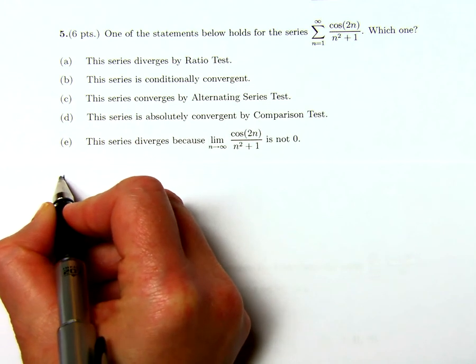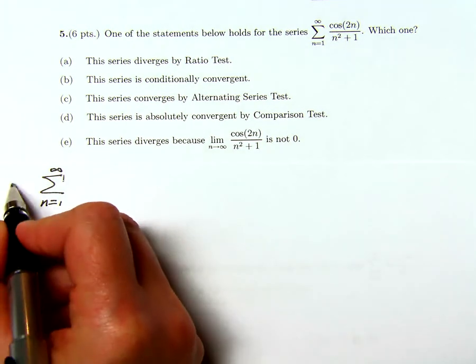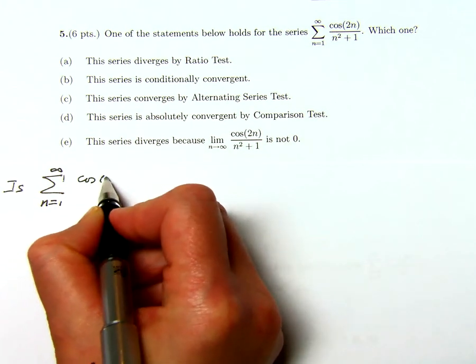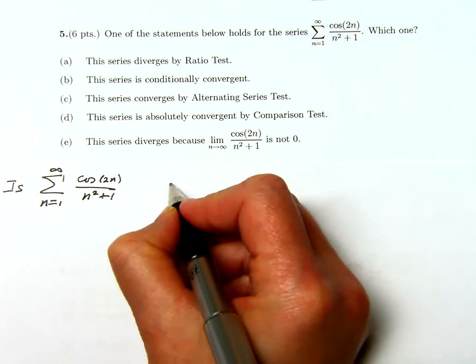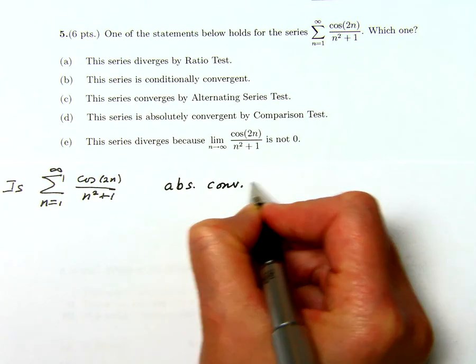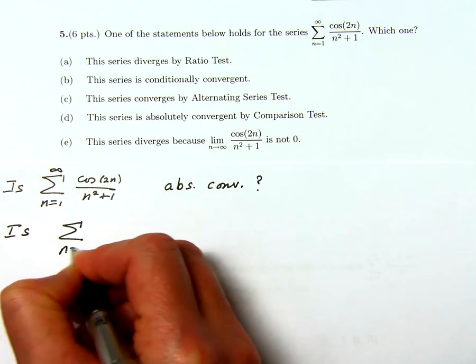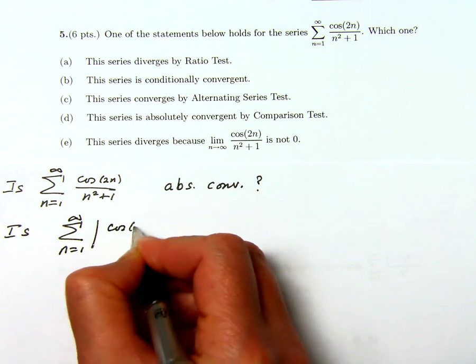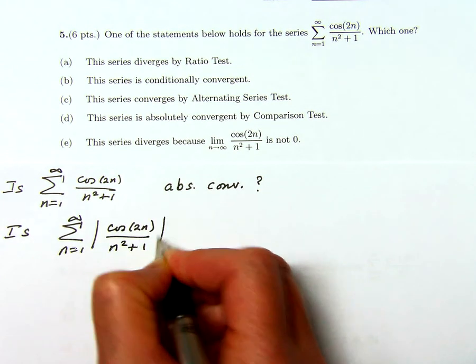So the question is, is the sum of cosine 2n over n squared plus 1 absolutely convergent? And that's the same as saying, is the sum of the absolute values convergent?